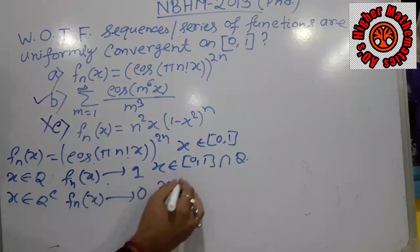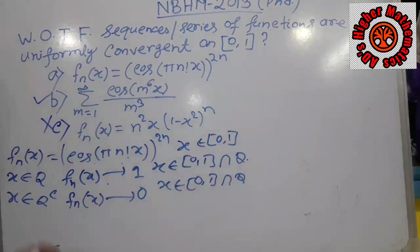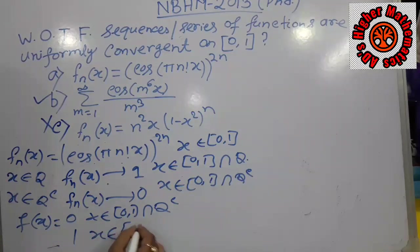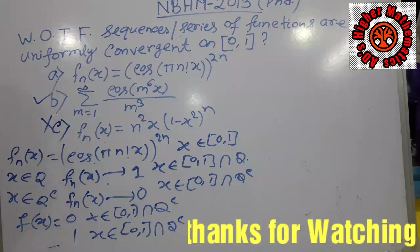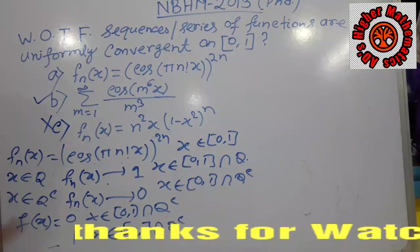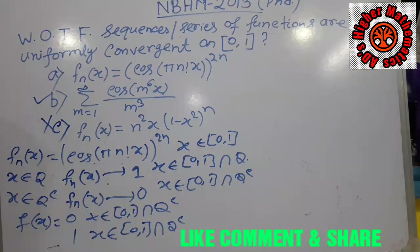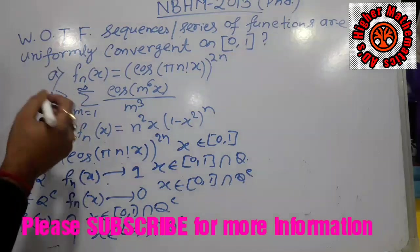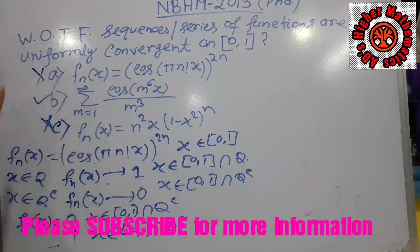Writing the limit function in compact form: F(x) = 0 when x belongs to [0,1] ∩ ℚ complement (irrational), and F(x) = 1 when x belongs to [0,1] ∩ ℚ (rational). This is precisely the Dirichlet function, which is nowhere continuous. Since if F_n(x) were uniformly convergent on [0,1], the limit function F(x) must be continuous — but it is not — therefore the sequence is not uniformly convergent. So option A is false, and only option B is correct. Thank you for watching.